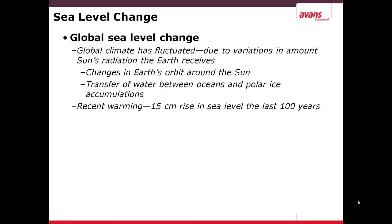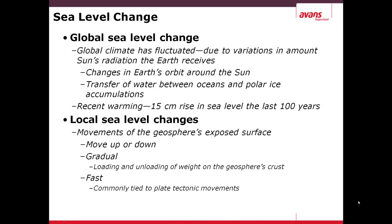Sea level change. There's global sea level change, which has varied throughout the Earth's history, due to variations in the amount of the Sun's radiation that the Earth receives. This can be caused by changes in Earth's orbit around the Sun, and also the transfer of water between oceans and polar ice accumulations. In the past 100 years, the oceans have risen 15 cm. There are also local changes in sea levels, which can be caused by movement of the geosphere — the tectonic plates underneath the ocean. These can move up or down, either gradually through loading and unloading of weight on the geosphere's crust, or quite fast, as in plate tectonic movements such as tsunamis.